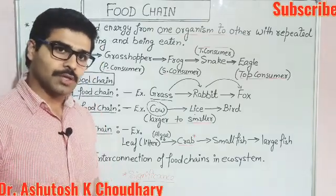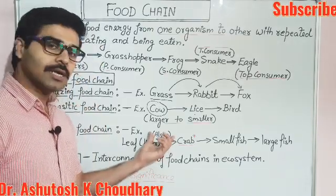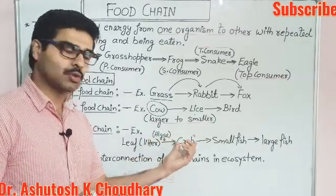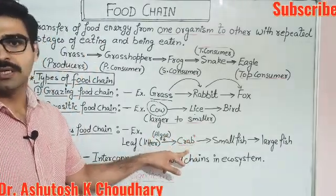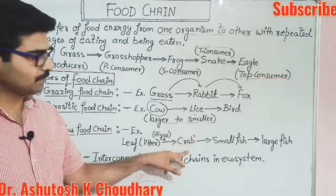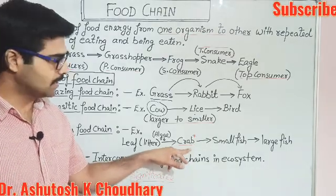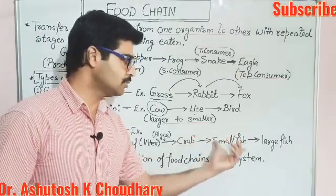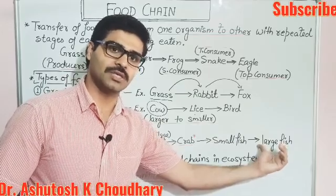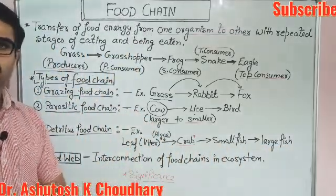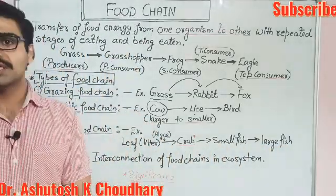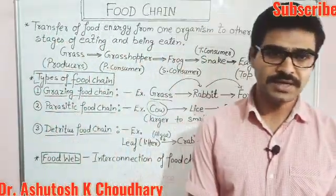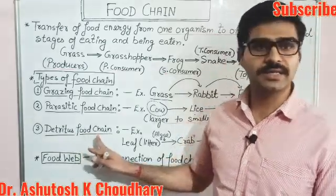This algal colony on the leaf is eaten by crab — so crab is a detrivore. In the same way, this crab is eaten by small fish, and this small fish is eaten by large fish. This is an example of a detritus food chain, which is generally found in mangrove forests, estuaries, wetlands, and deltas.